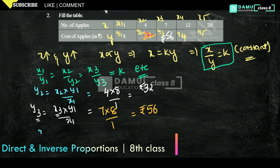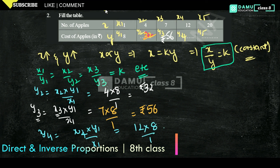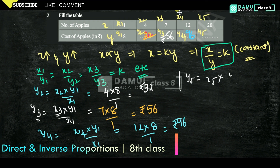For y4: y4 = x4 times y1 by x1. We are using the first pair as reference, though you can use any pair such as y2/x2, y3/x3, etc. x4 = 12, so y4 = 12 times 8 by 1 = 96 rupees. Next, y5 = x5 times y1 by x1 = 20 times 8 by 1 = 160 rupees. These are found based on direct proportions.